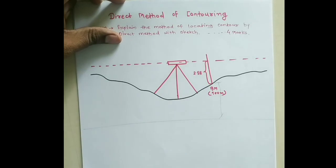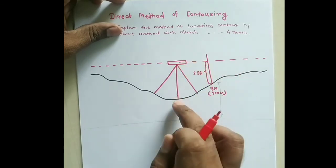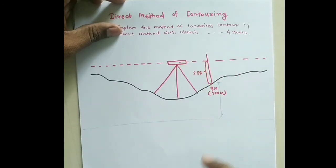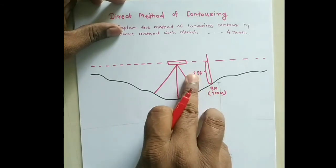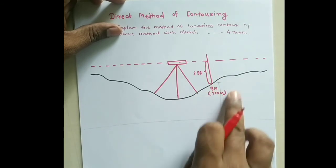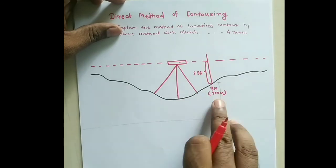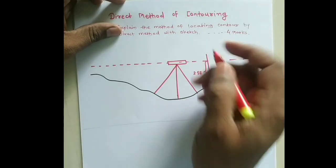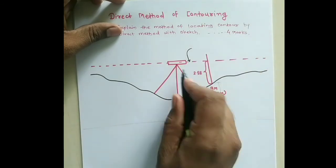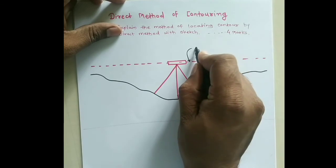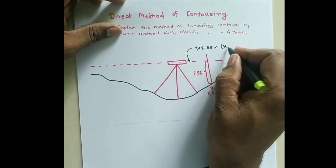To find the height of instrument, we add the staff reading at the benchmark to the reduced level of the benchmark. The reduced level of the benchmark is 100 meters and we add 2.58, giving us the height of instrument as 102.58 meters. This height of instrument is the reference from which we will directly plot the contours on the ground.